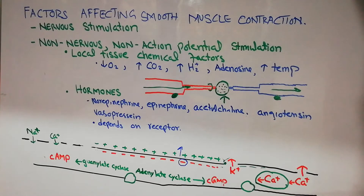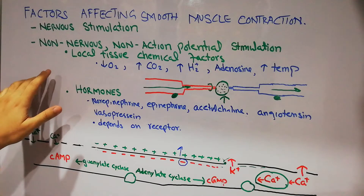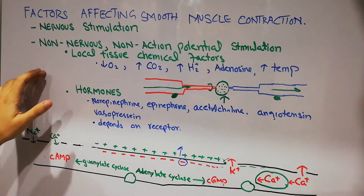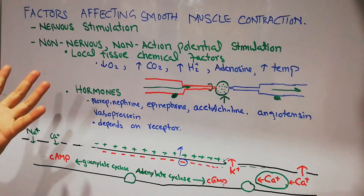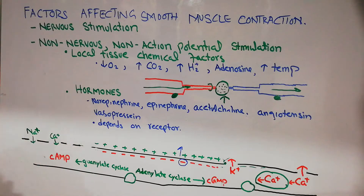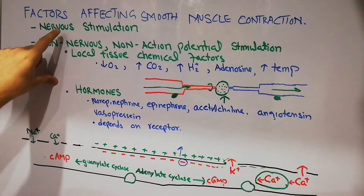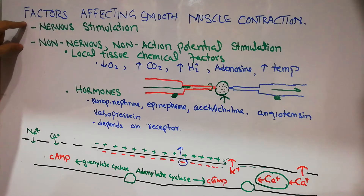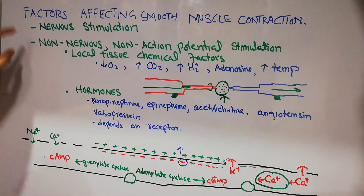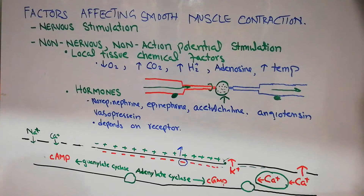In this lecture we are going to discuss the factors affecting the contraction and relaxation of smooth muscles. There are basically two types of factors: in the case of skeletal muscles, contraction occurred mostly due to nervous stimulation, but in the case of smooth muscles we have two types — nervous stimulation and non-nervous, non-action potential stimulation.